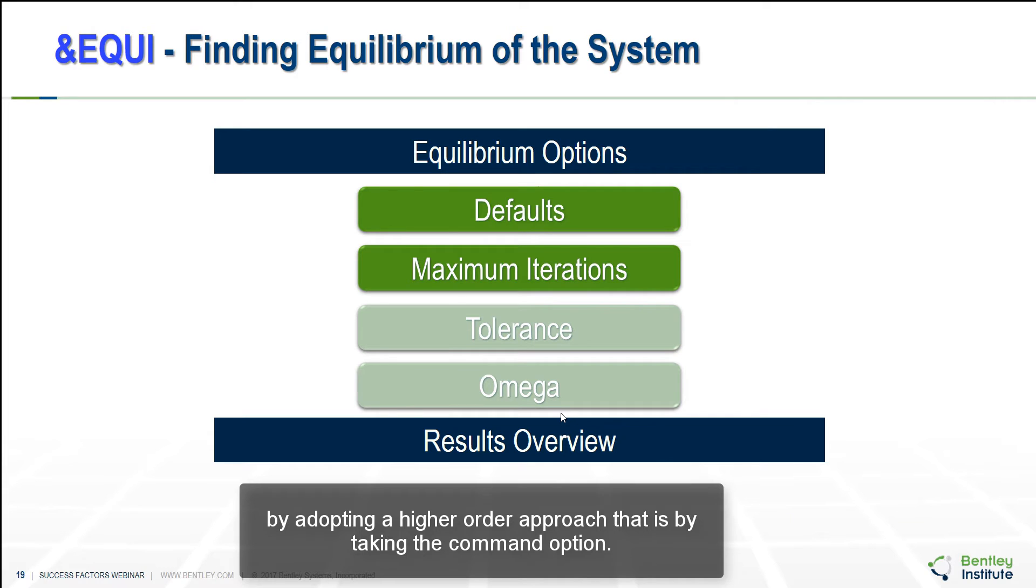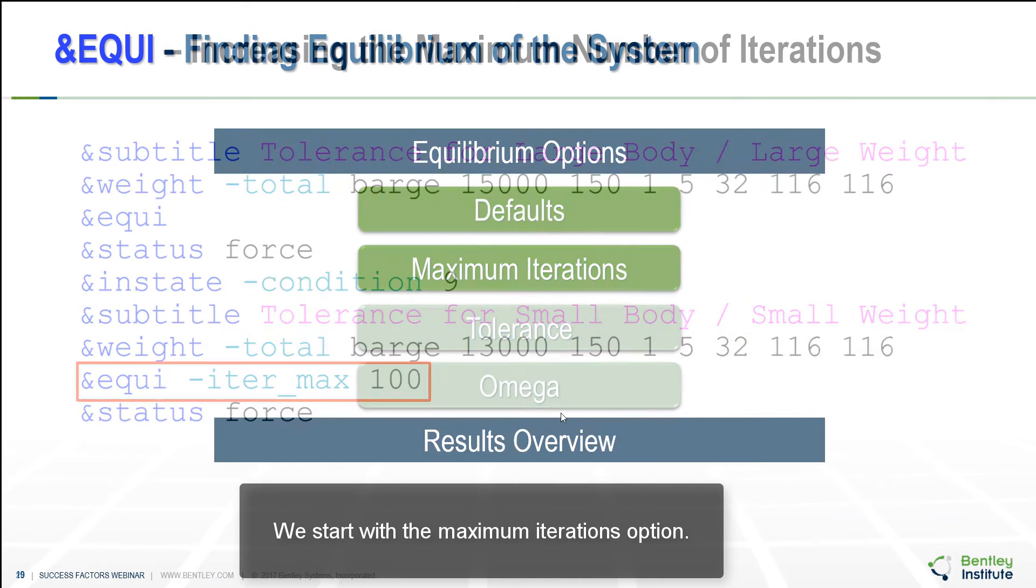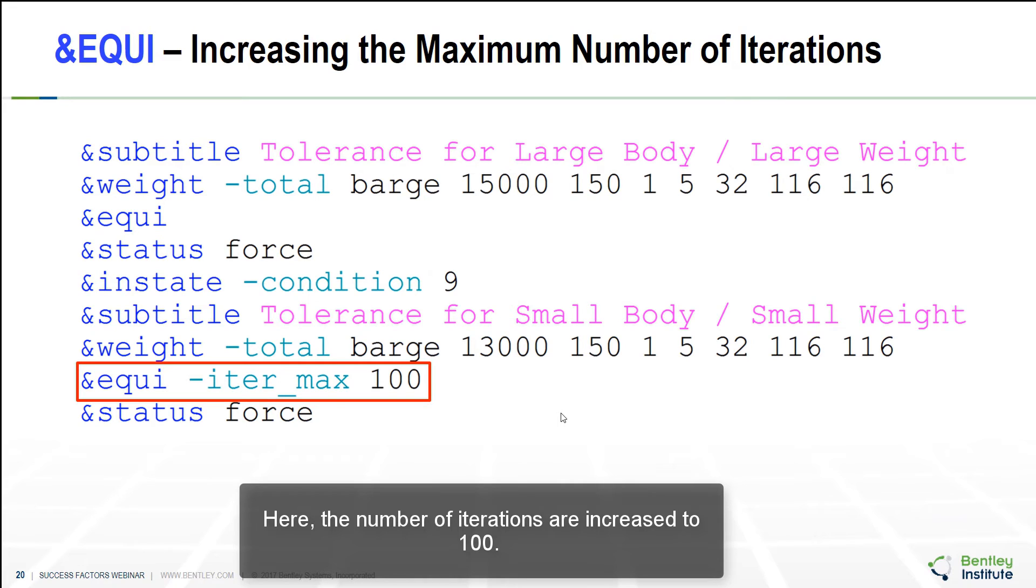This is the equilibrium position research technique which can be improved by adopting a higher order approach that is by taking the command options. We start with the maximum iteration options. Here the number of iterations are increased to 100. Here the starting position was changed from what was presented earlier. Remember the equilibrium position is dependent on where the starting point is. Since the starting position has been changed, we are guessing that we will need a larger number of iterations. And we know that if the computers were analog we could always find the force equal to zero. But because the computers are digital, we are going to have to accept something that is not zero. We know that we can accept the 1% to 10% errors.